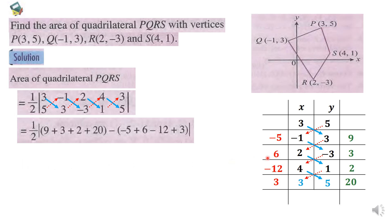So we add up 9, 3, 2, and 20, and we get 34. Then we add up negative 5, 6, negative 12, and 3, and we get negative 8.